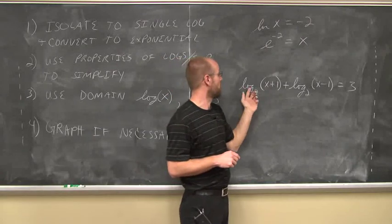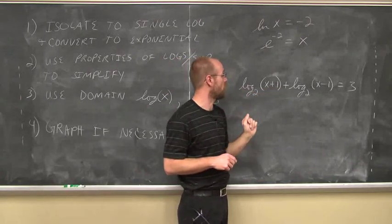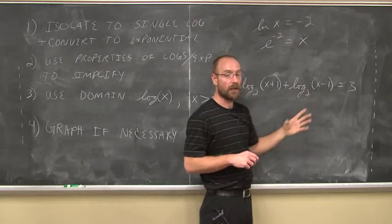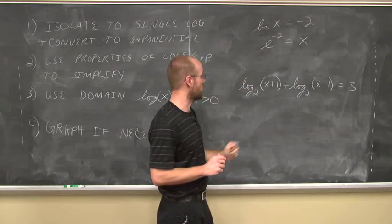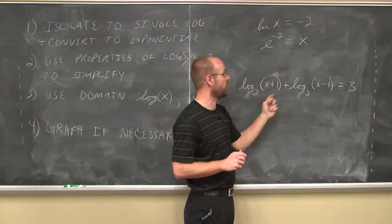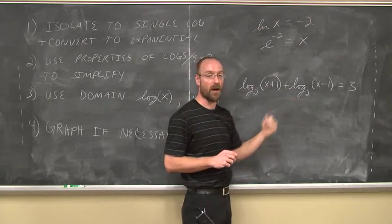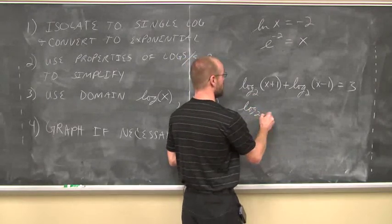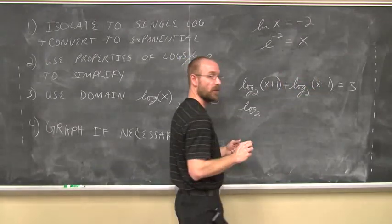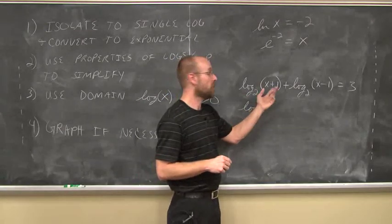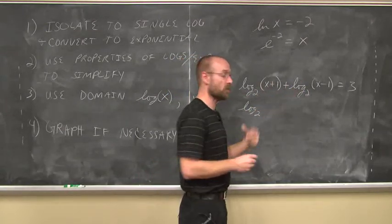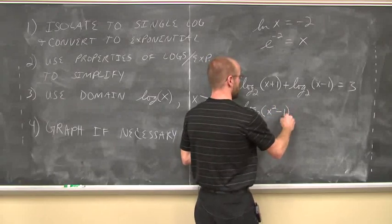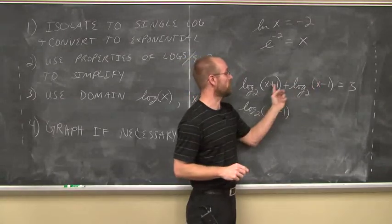Let's look at this one here. We have log base 2 of the quantity x plus 1 plus log base 2 of the quantity x minus 1. We can use our properties of logarithms. Since they have the same base and we have the addition of logs, we can use the product rule. It's log base 2 of x plus 1 times x minus 1. And if I FOIL those out, I see it's the sum and difference of terms, which is going to give me x squared minus 1.